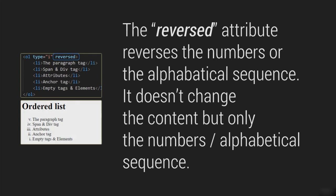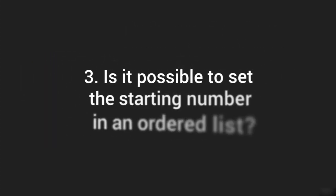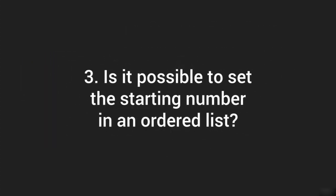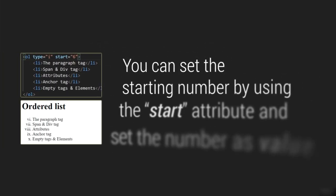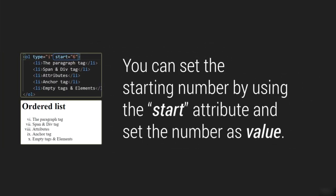The last question is: is it possible to set the starting number in an ordered list? Yes, certainly. By default it starts with 1 or maybe A, but if you want to start it with 5 or 6 like we have seen, you can certainly do that by using the start attribute.